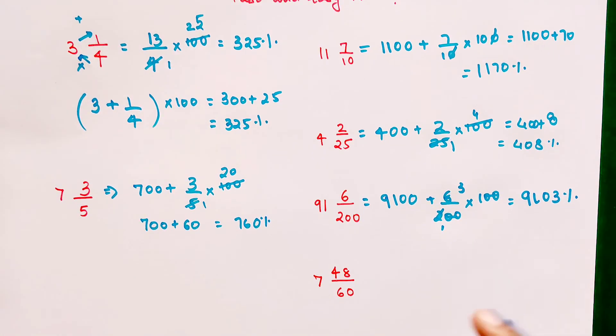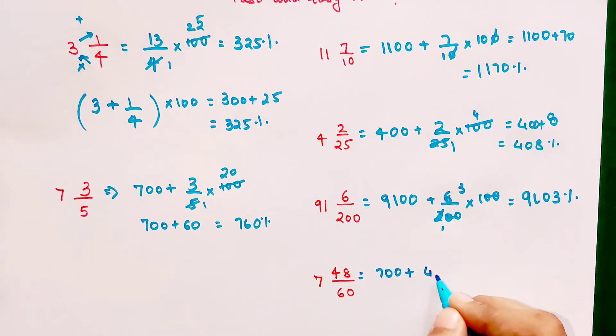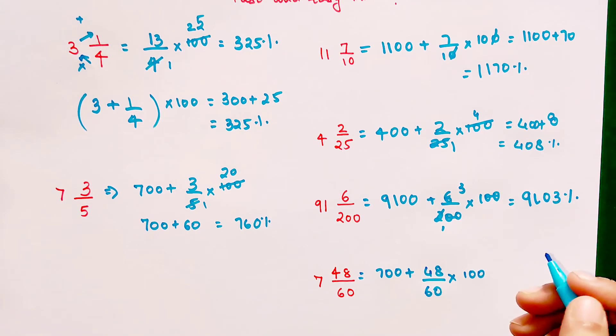Now over here we have 700 plus 48/60 into 100. Students don't forget, after this I'm going to put up a DIY question and you'll let me know your answers in the comment section. But please understand, whenever I put up a DIY question, you have to use the trick shown in the video to solve those DIYs. Only then the trick will get registered in your mind and you'll be able to use it in critical moments.